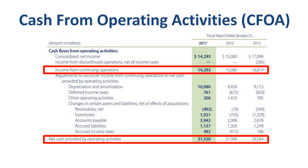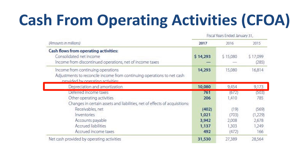Walmart and many other companies use the indirect method of cash flow reporting — you start with net income, then make adjustments to reconcile to CFOA. First, you add back depreciation and amortization: $10.1 billion in 2017 for Walmart. This amount was deducted as a cost when net income was calculated, but since you don't pay depreciation and amortization to anybody, it is a non-cash expense that must be added back to reach a cash-flow-based view.